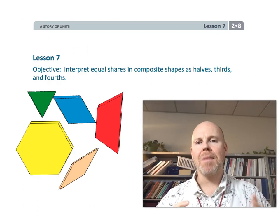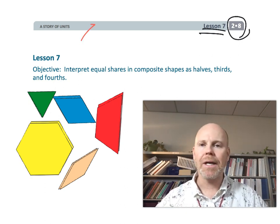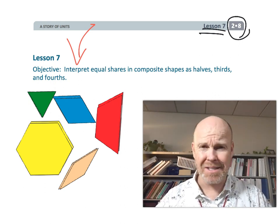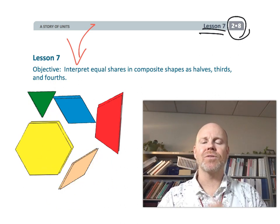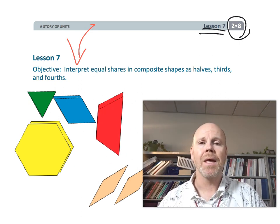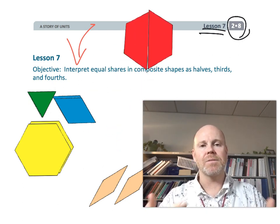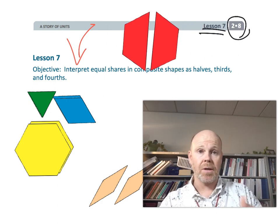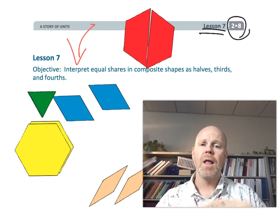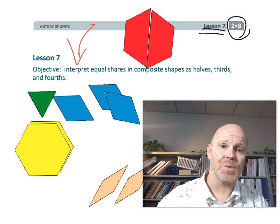All right, this is second grade, module 8, lesson 7. In this lesson, students are going to be interpreting equal shares in composite shapes as halves, thirds, and fourths. What does this mean? We're going to continue using polygons that we've been talking about in previous lessons, but now we're going to be talking about fractions. Halves is a figure that has two equal parts, thirds is a polygon that has three equal parts. That's what we're going to be talking about in this lesson.